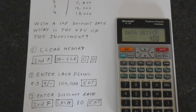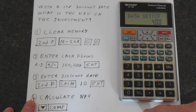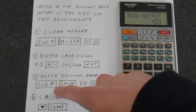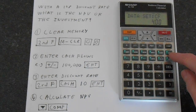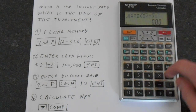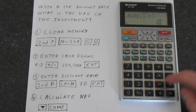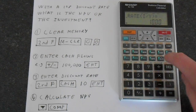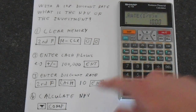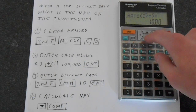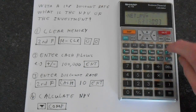Now we need to put in the discount rate. Press second function to get to the cash flow function, which is on the CFI key. Enter a discount rate of 10, then press Enter. For the final step, press down and then press comp.